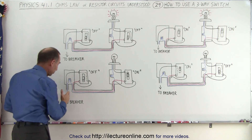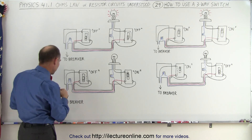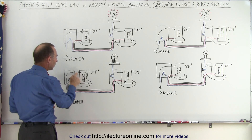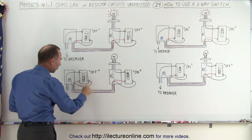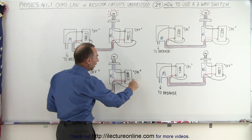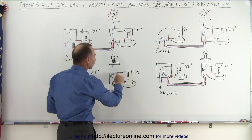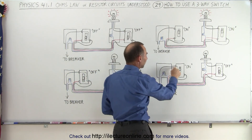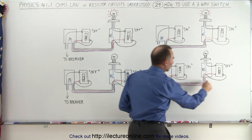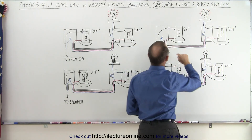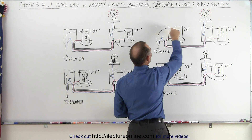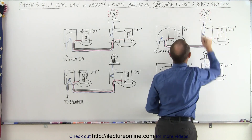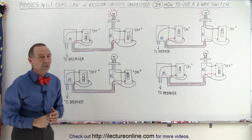You also need a third wire that starts at the breaker panel, connected to the top left. Then you have a connection from the bottom right to the bottom right of the other switch, and from the top left of that switch to the light bulb. So in each case: from the breaker to the top left, from the bottom right to the bottom right, and from the top left to the light bulb. They're all connected in exactly the same way.